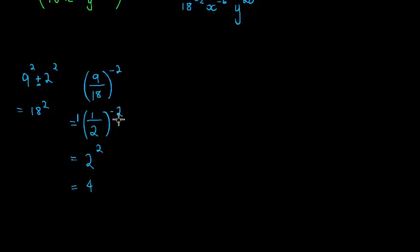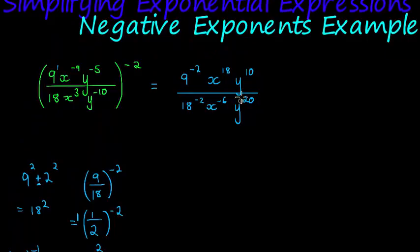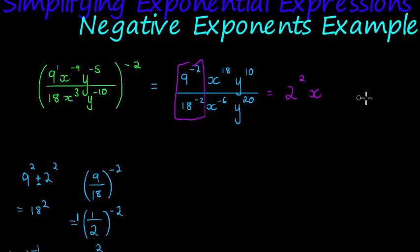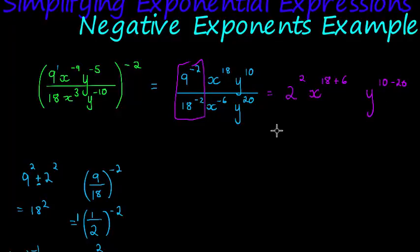So whenever you have a fraction with a negative exponent, you can just swap the fraction around: 1 over 2 to the power of negative 1 becomes 2 over 1 to the power of positive 1. That's what's happening here. The constant part simplifies to 2 squared, which is 4. Then I write down all the other factors: x to the power of 18 and y to the power of 10, and subtract the denominator exponents — x: 18 minus negative 6 is positive 24, y: 10 minus 20 is negative 10.